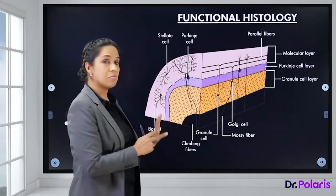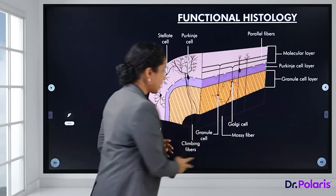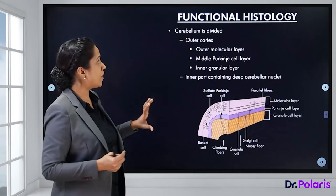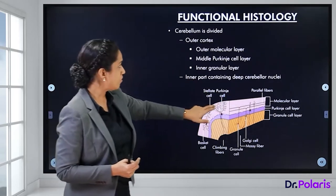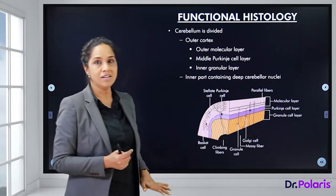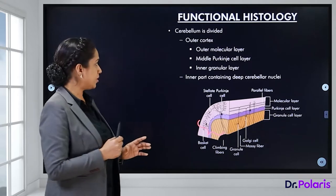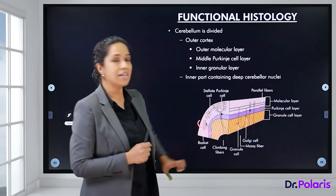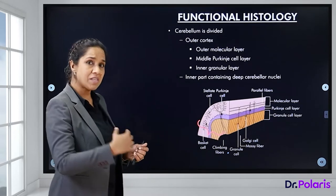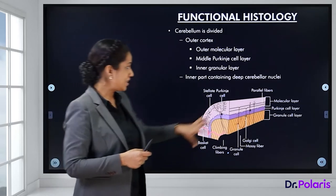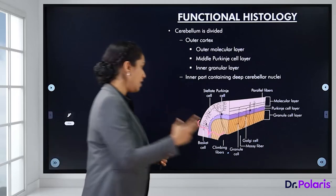All these cells — mossy fibers, climbing fibers, Purkinje cells, stellate cells, basket cells — are interconnected through their dendrites and axons. The outer cortex consisting of these three layers surrounds the inner deep cerebellar nuclei. After discussing the cellular layers, we will go into the deep cerebellar nuclei.